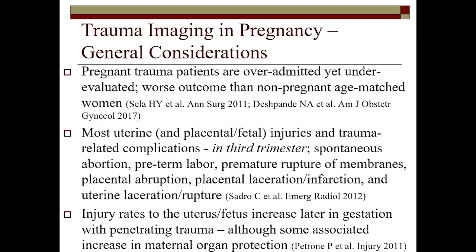A variety of things can happen especially later in gestation, including placental abruption, which can threaten the fetus. There are various papers looking at the management of pregnant trauma patients — they tend to be over-admitted yet under-evaluated. A recent paper showed that in an age-matched control of trauma patients, women who were pregnant had a statistically significantly worse outcome compared to those who were not. Most of the serious injuries from trauma tend to occur in the third trimester. These injuries can lead to consequences including spontaneous abortion, preterm labor, premature rupture of membranes, placental abruption, placental laceration, infarction, and uterine laceration and rupture. With penetrating trauma, the risk to the fetus increases later in gestation — a bigger target — but there is also some associated maternal organ protection of the fetus at the expense of the mother.